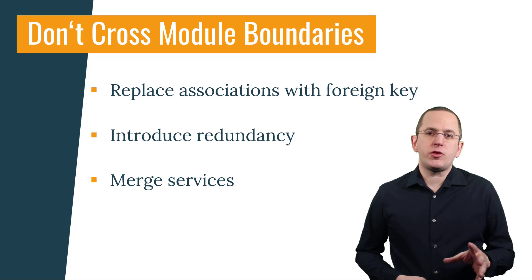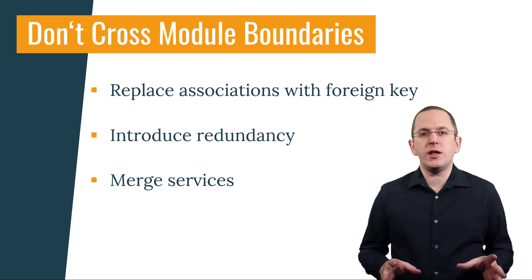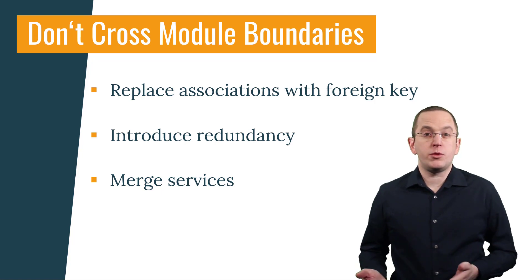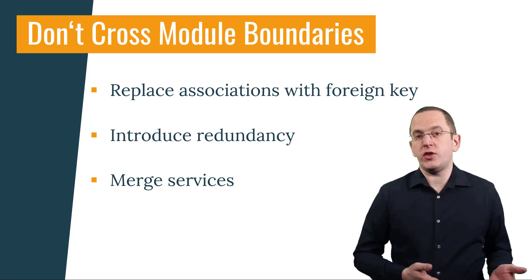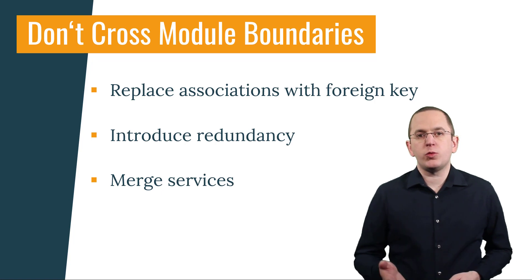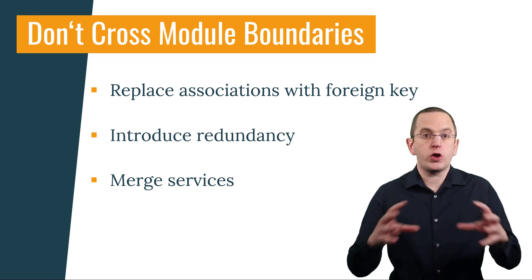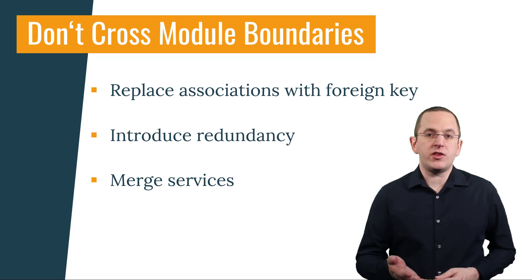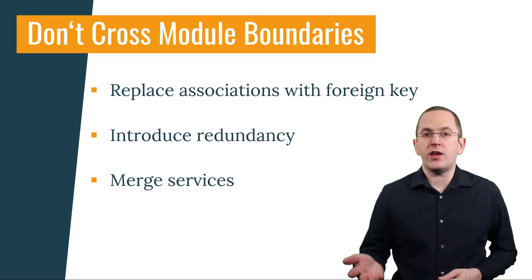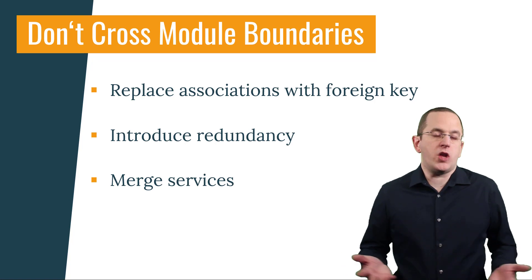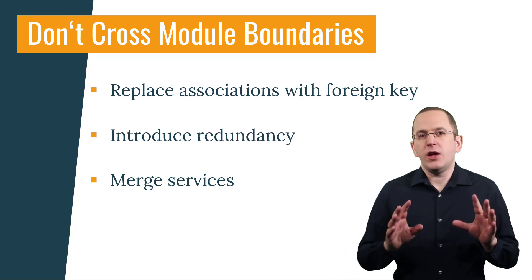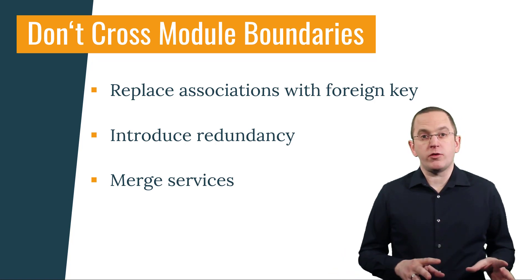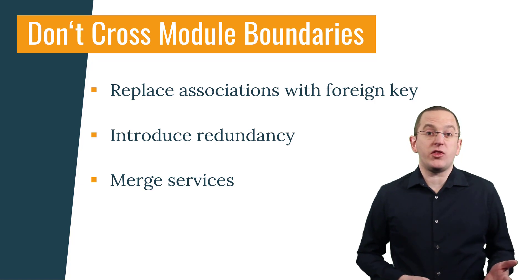If multiple services require huge parts of the same information, you're often dealing with the symptoms of a wrong service design. Your services could be too small or you might be missing a service. The most common way to solve this issue is to merge these services into one. That service then handles these dependencies internally, in the same way as it did in the monolith, and the problem disappears. If you don't have good reasons to keep the services separate, I recommend taking this approach.